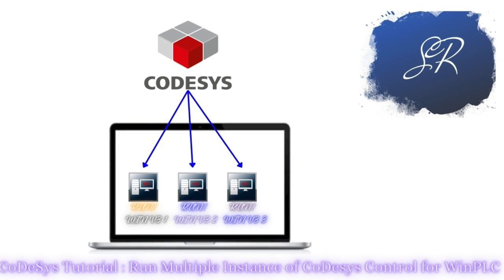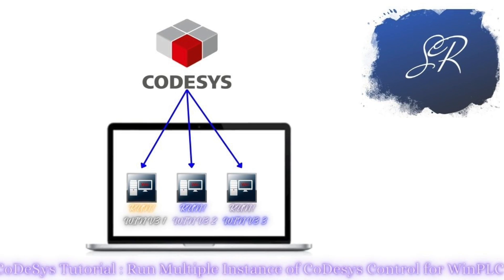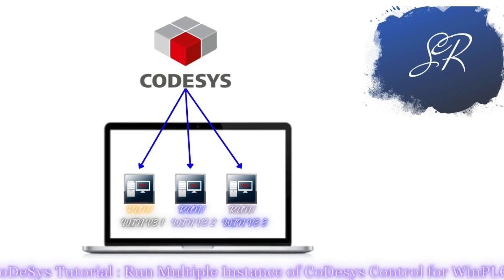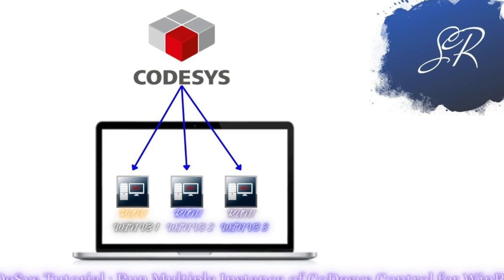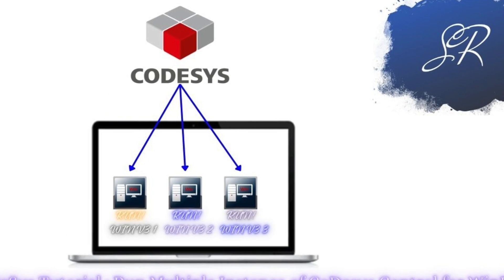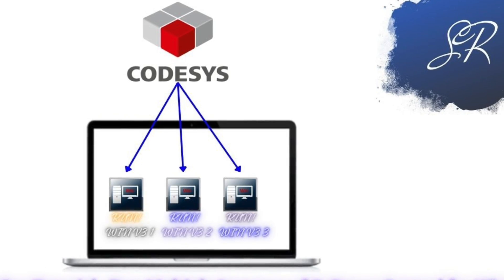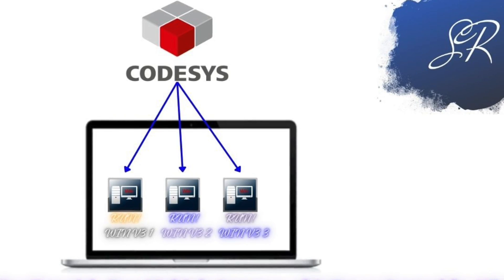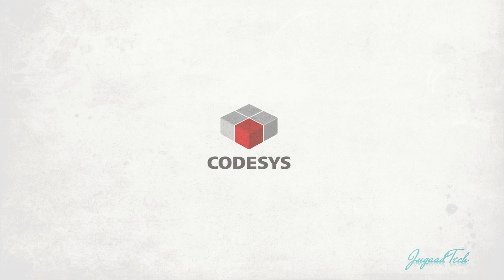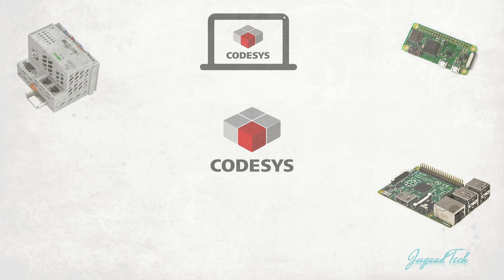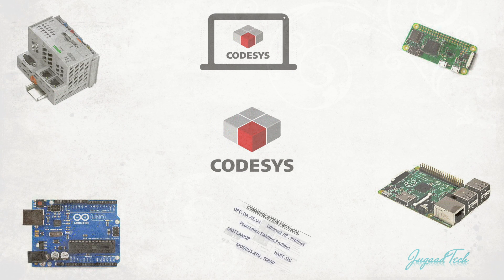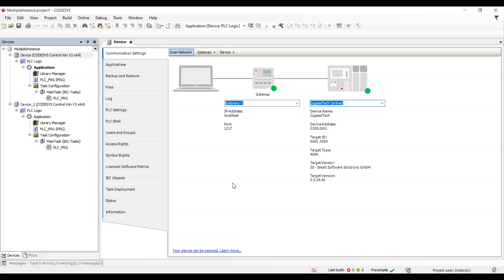Hello friends, welcome to the CodeSys tutorial series. A lot of times we face a challenge where we have only one system but we want to test multiple software at the same time, or even the communication between two PLCs on a laptop. By default, when using CodeSys Control for Windows, it runs only as a single instance and doesn't provide any option to run multiple instances. In this tutorial, I'm going to talk about how we can run multiple instances of CodeSys Control for Windows.